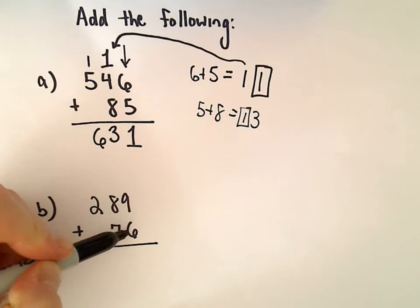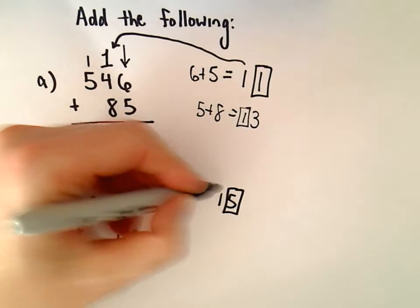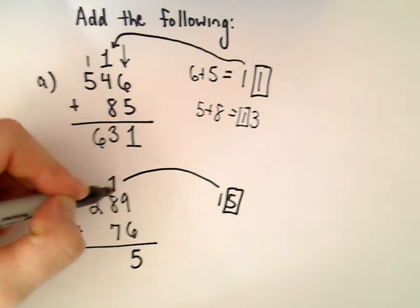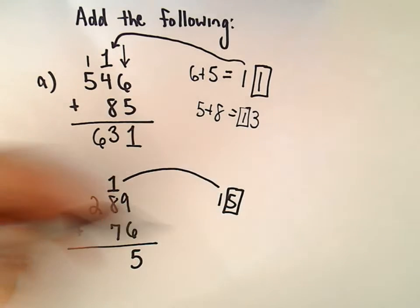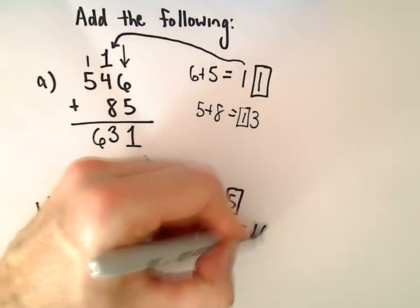Let's see, 9 plus 6, that's going to be 15. So again, I'm going to put the 5 down, carry the 1. Let's see, 1 plus 8 is 9. 9 plus 7, that's going to give us 16.